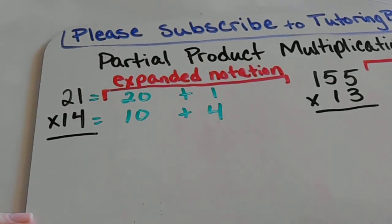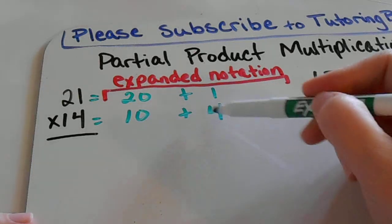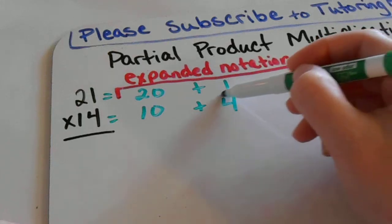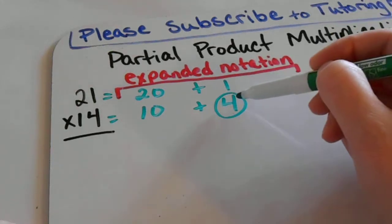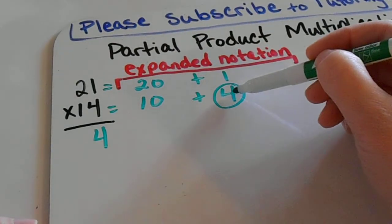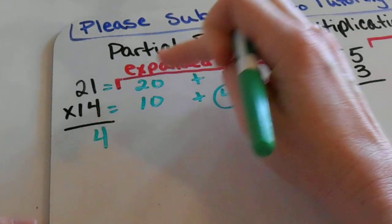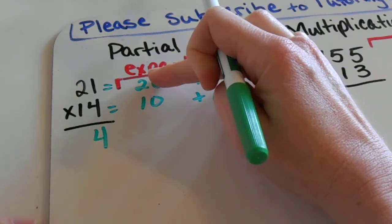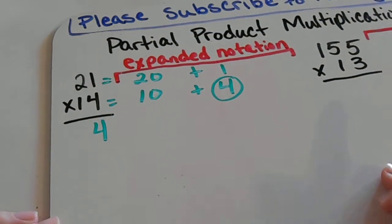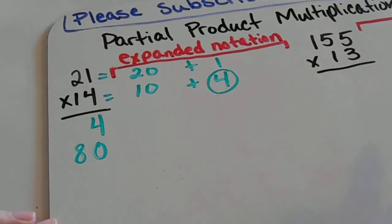Now with multiplication we have to multiply each of these numbers down here times each of the numbers up top. So I start with the number 4 and I multiply 4 times 1 and that just goes underneath here. Then I'm going to multiply 4 times 20. Most kids know that if you have a number with a 0 at the end you can just cover that 0 up and do 4 times 2 and then add in that 0 onto the end. So 4 times 2 is 8 but I'm going to have an extra 0 on the end so that makes it 80.